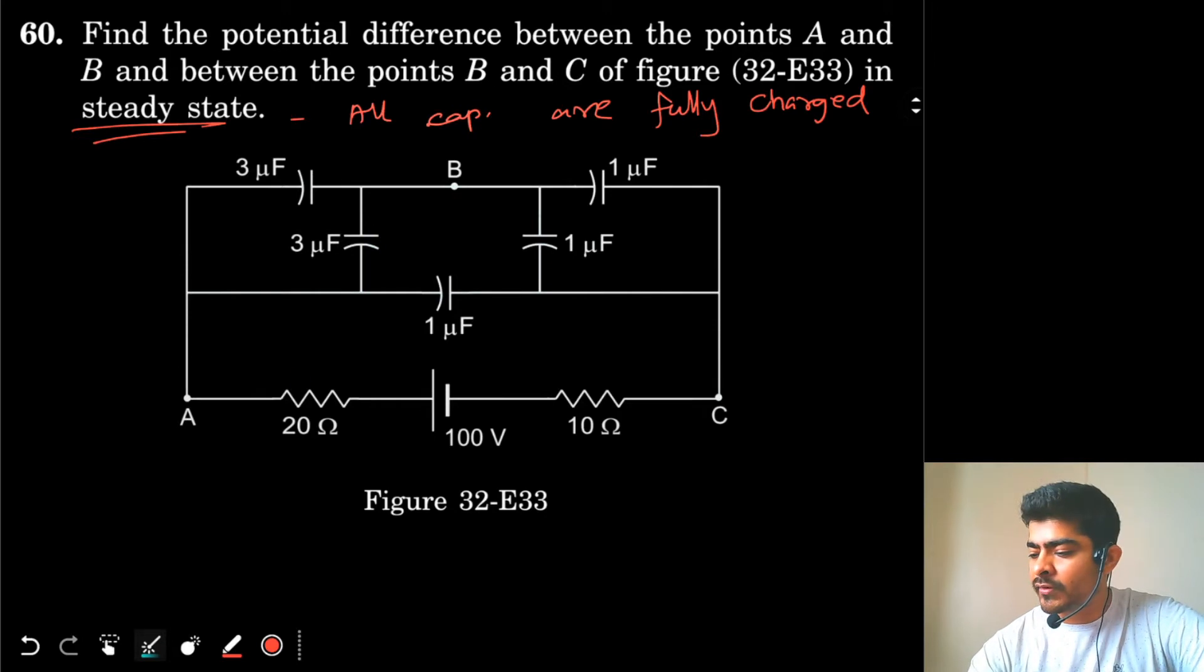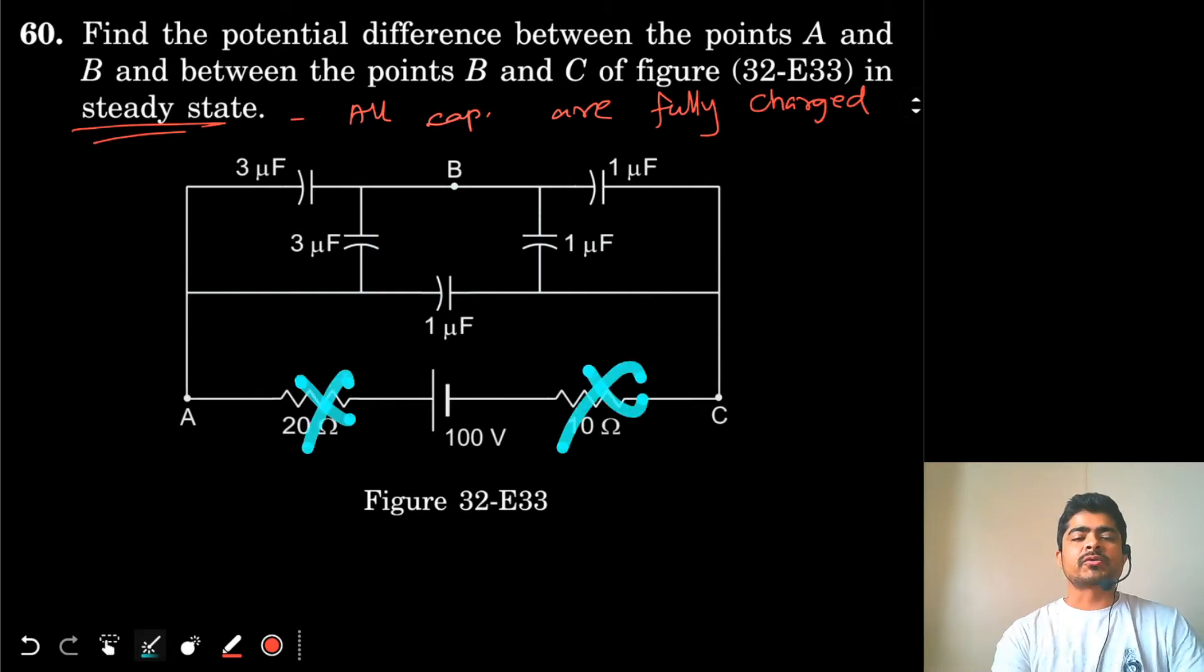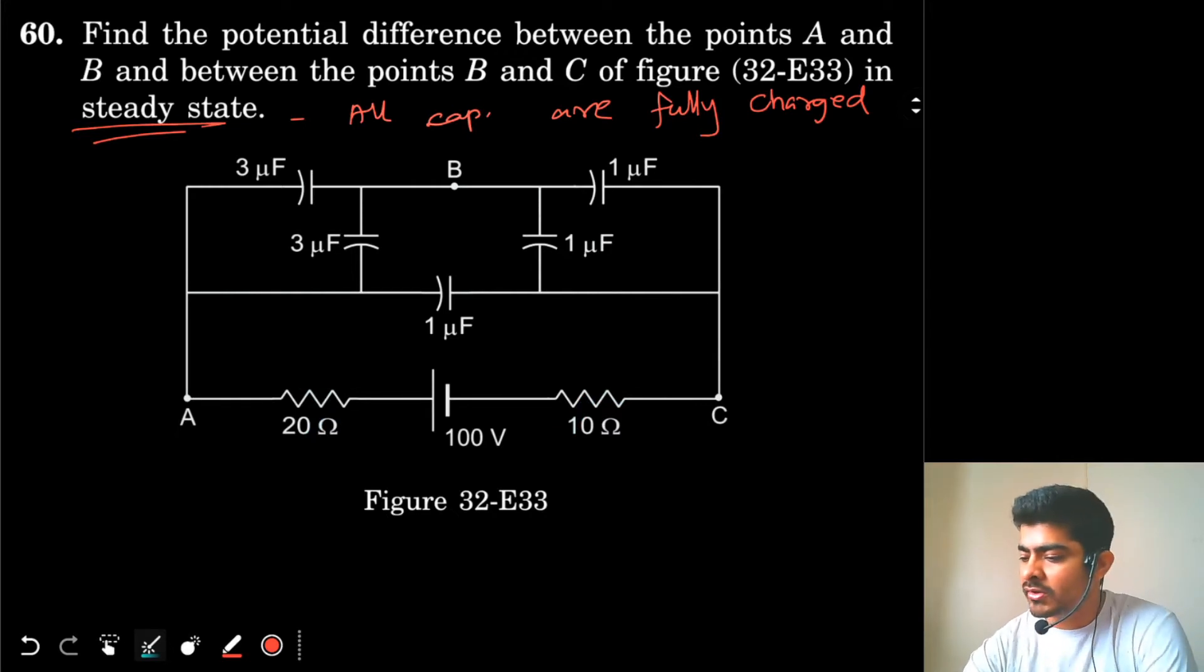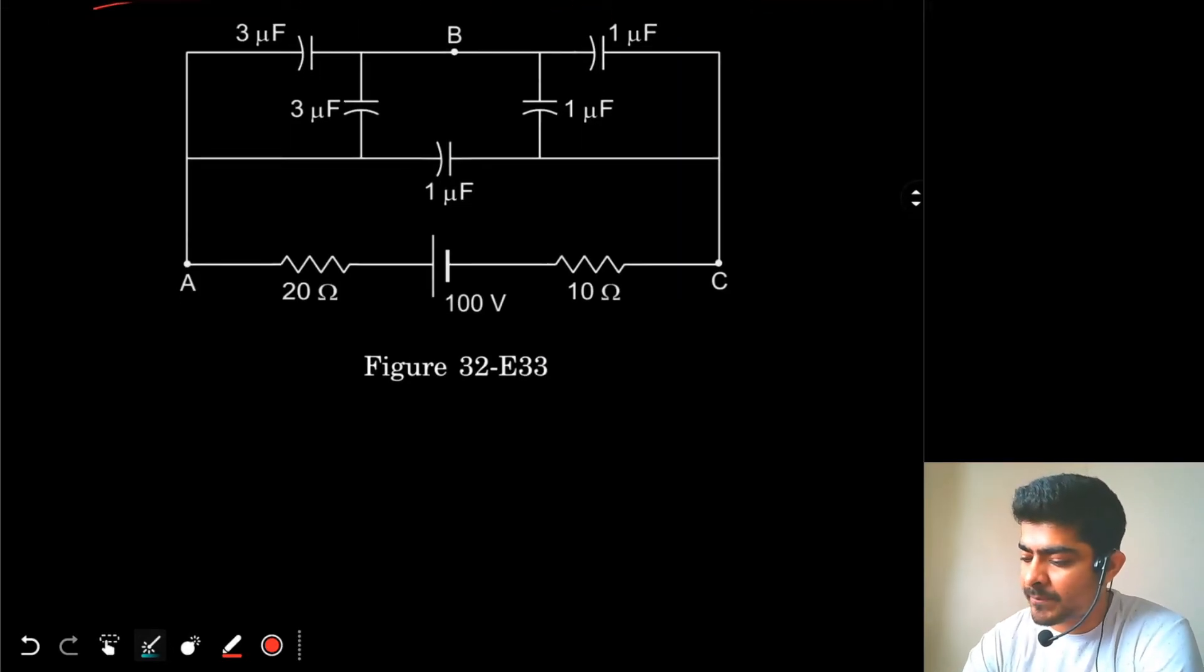So we just have a simple capacitor circuit now. We can just ignore these resistors over here. We don't need them because the current is not flowing, so the resistors are not important. So I will just remove the resistors and redraw the circuit.